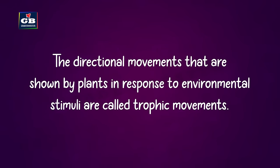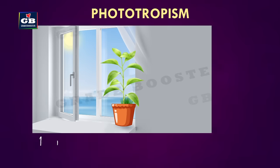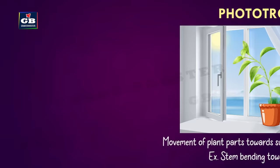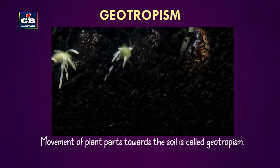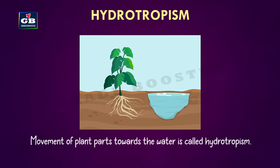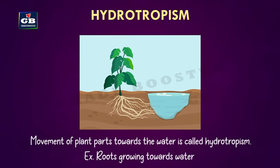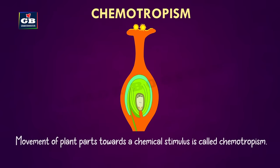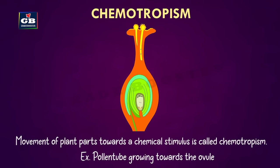Directional movements shown by plants in response to environmental stimuli are called tropic movements. Movement towards sunlight is called phototropism (e.g., stem bending towards sunlight). Movement towards soil is called geotropism (e.g., roots growing towards soil). Movement towards water is called hydrotropism. Movement in the direction of a touched object is called thigmotropism (e.g., tendrils coiling around a support). Movement towards a chemical stimulus is called chemotropism (e.g., pollen tube growing towards the ovule).